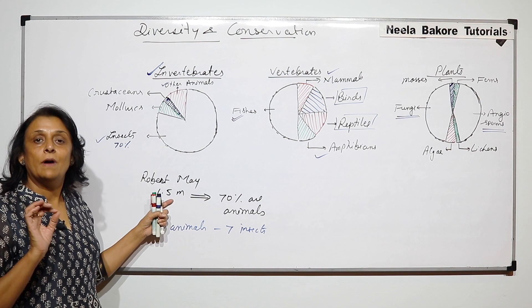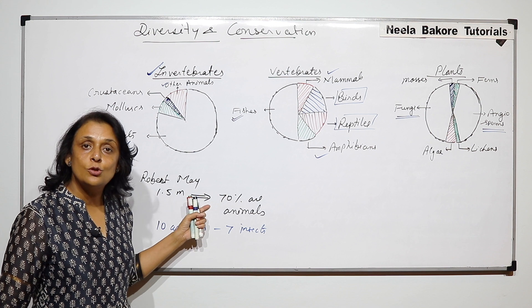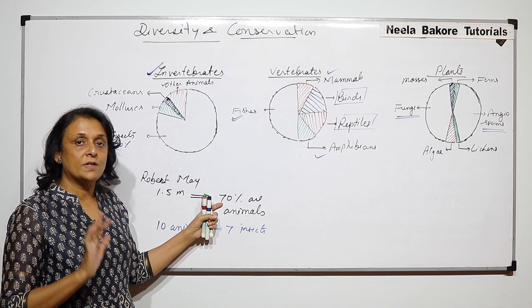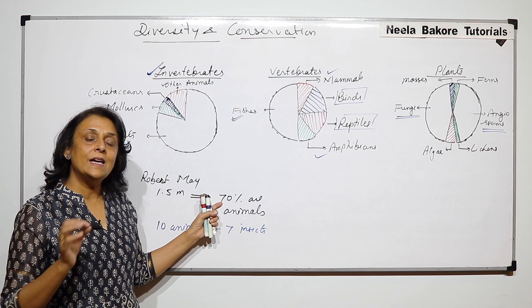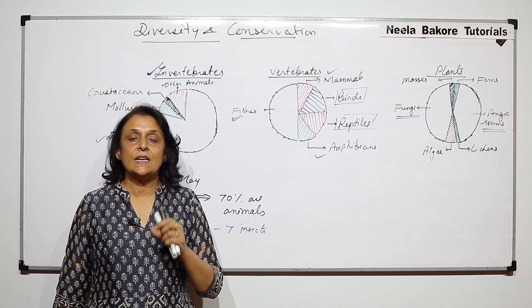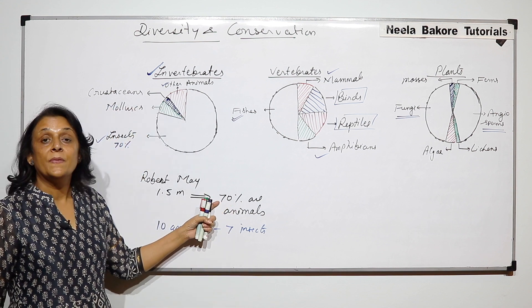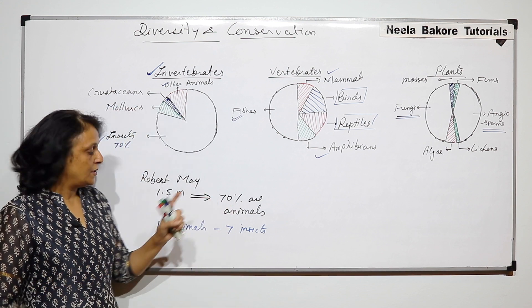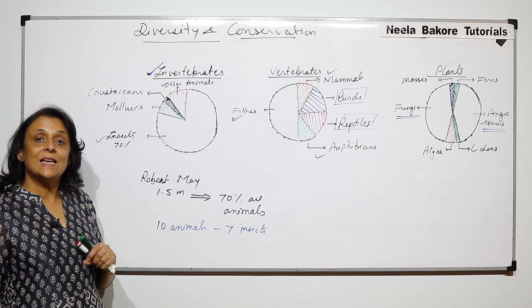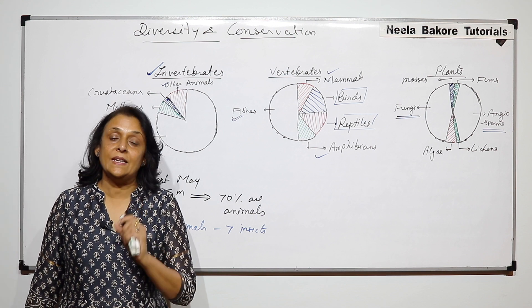So out of 1.5 million organisms which have been discovered and studied so far, 70% are animals. 22% approximately would include plants, bryophytes, algae, gymnosperms, angiosperms etc. So majority is animals and amongst animals 70% are insects.